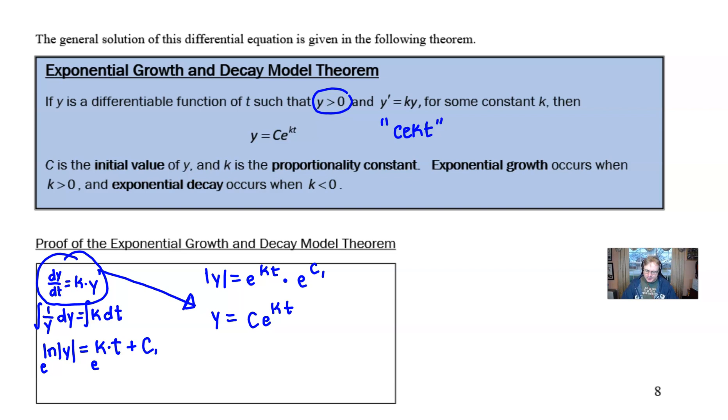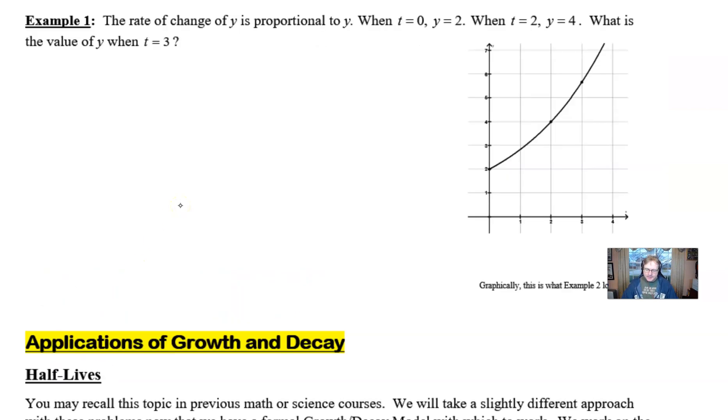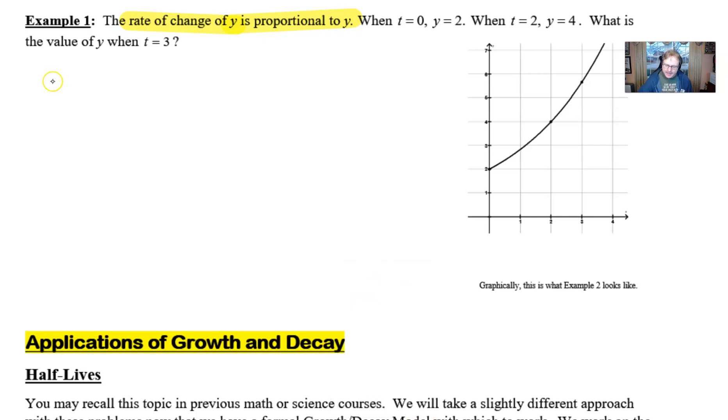Let's take a look at our example. It says here the rate of change of y is proportional to y. When t = 0, y = 2. When t = 2, y = 4. What is the value of y when t = 3? So what we're going to do here is first of all make a determination about is this a y = kekt kind of problem. And again, if we just simply read through the problem, the rate of y is proportional to y, that's all the evidence that we need. That means that y = Ce^(kt), and you've bypassed a whole bunch of steps of work, all those steps that I just showed you in that proof on the previous page.